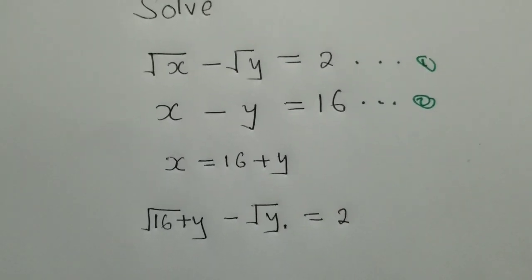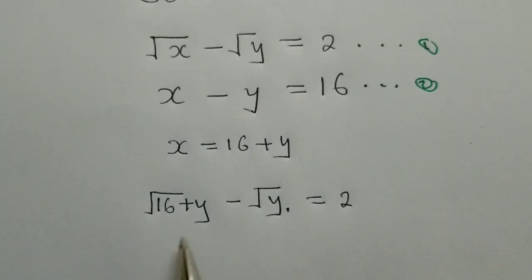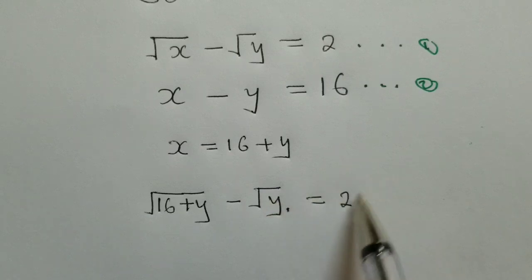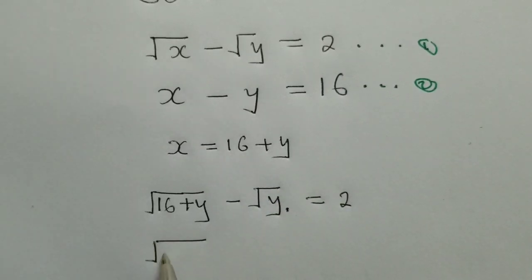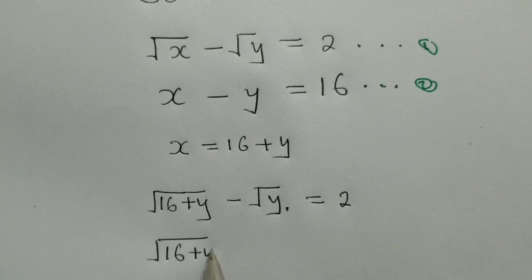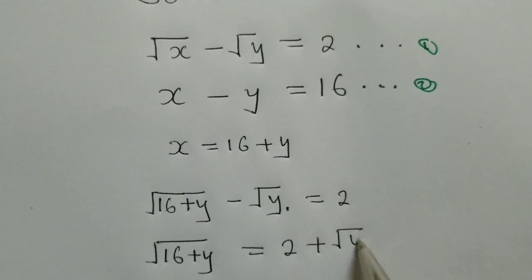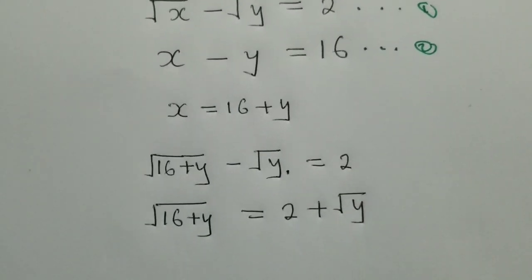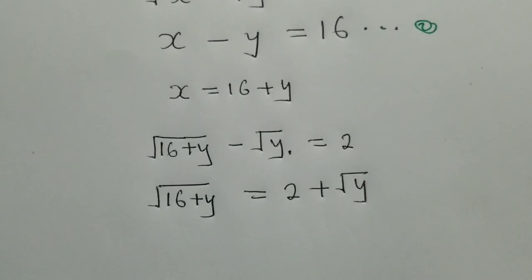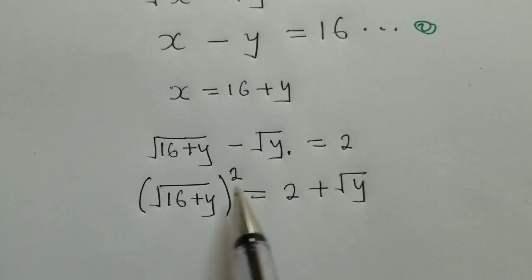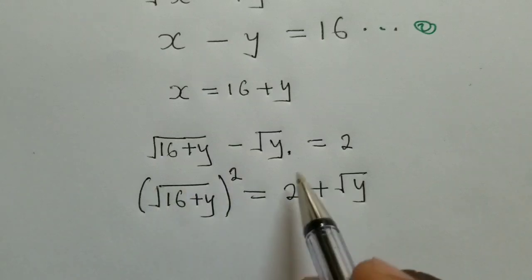The next thing here will be to make negative root of y cross the equal sign. So we shall have root of 16 plus y is equal to 2 plus root of y. Now from this stage, we can apply a power 2. We know that a power 2 will cancel the square root here.